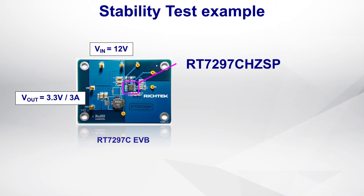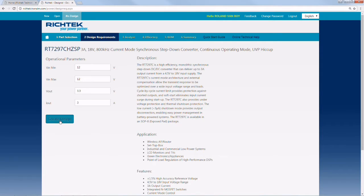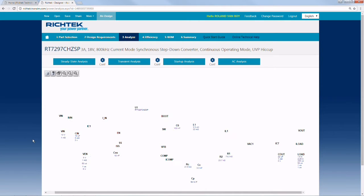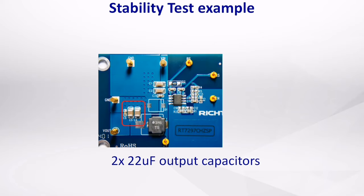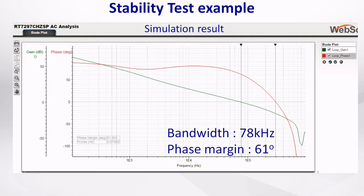Let's test the stability of a 3.3V supply, which uses RT7297C, an 800 kHz, 3A current mode buck converter. I used the RichTech Designer online simulation tool to calculate circuit values. The circuit requires two 22µF output capacitors, and the design tool predicts good stability, with a control bandwidth of around 78 kHz.